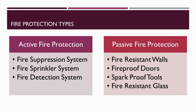There are two types of fire protection: active fire protection (AFP) and passive fire protection. Active fire protection takes action to put out a fire, whereas passive fire protection helps prevent a fire from spreading or resists initial ignition. Under active fire protection we have fire suppression systems, fire sprinkler systems, and fire detection systems. Under passive fire protection we have fire-resistant walls, fireproof doors, spark-proof tools, and fire-resistant glass.